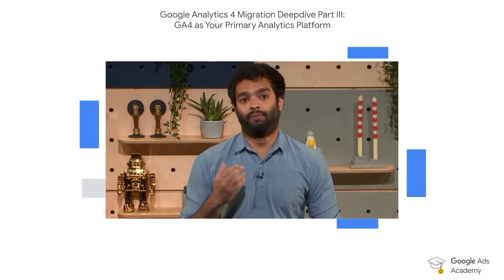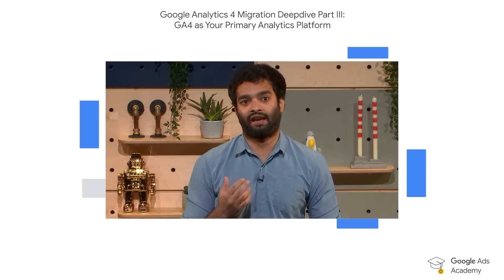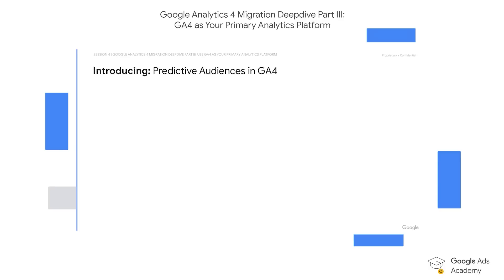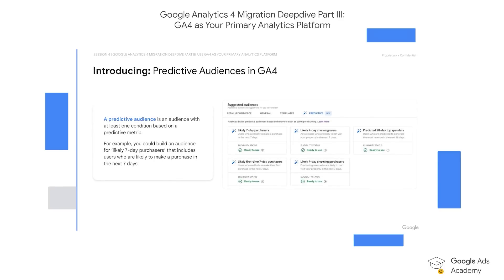GA4 also offers net new features when it comes to ads activation and specifically ads targeting. The most exciting is the launch of predictive audiences in GA4. Predictive audiences allow you to target users who, for example, are likely to make a purchase within the next seven days, are likely to churn within the next seven days, or are likely to spend the most within the next 28 days. Predictive audiences represent the evolution of machine learning capabilities in GA4 — they really save you as advertisers a lot of time and investment when it comes to building business intelligence and data science capabilities. Ordinarily, building these audiences would require a significant data science investment, but this is now done for you in minutes in GA4.